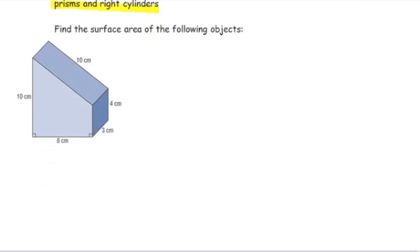First one, let's find the surface area of the following objects. There's one on this page, and then we'll look at one on the back. So, first of all, just a prism. A prism, remember, is any object that has the same cross-section throughout.